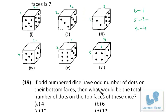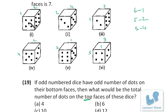If odd-numbered dice have odd number of dots on their bottom faces, what is the total on the top faces? Odd-numbered dice are 1, 3, and 5; they have odd numbers at bottom, so even numbers at top. For each we're left with 3 and 4 — odd at bottom means 3 at bottom, so 4 is at top. All three give 4 at top: 4 × 3 = 12.